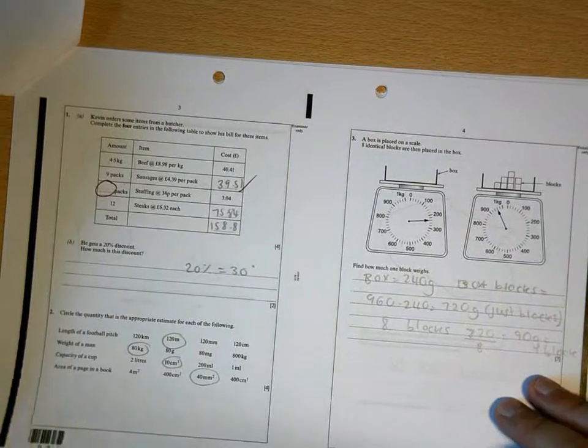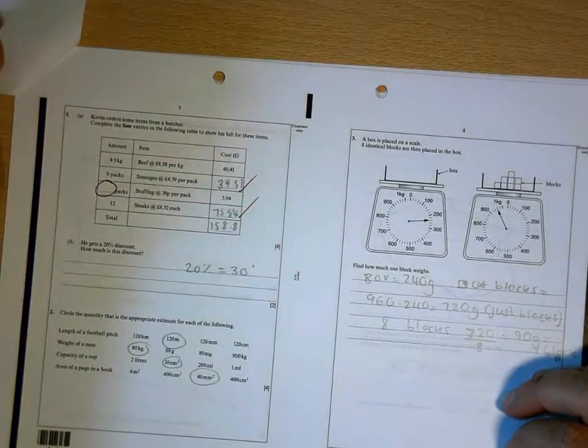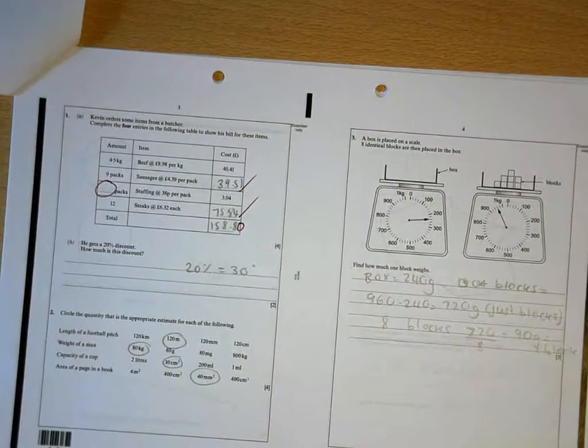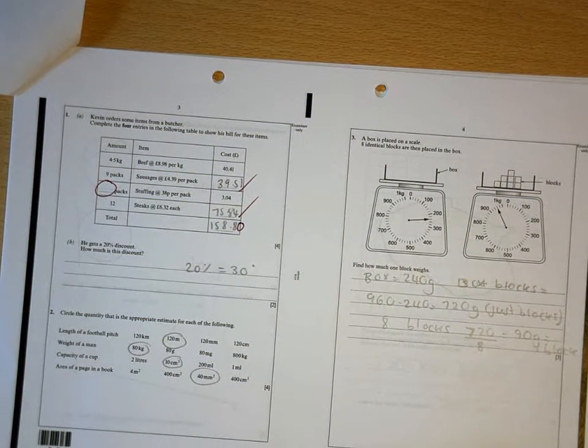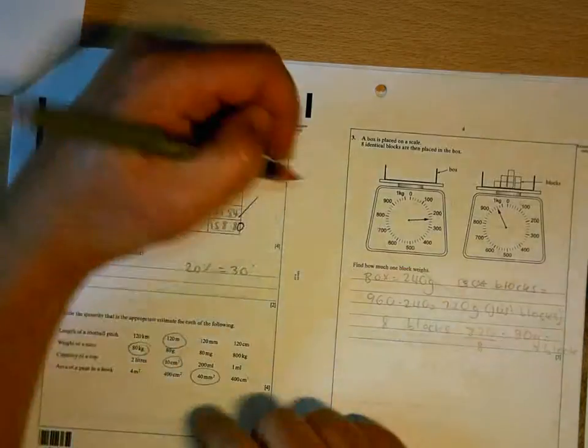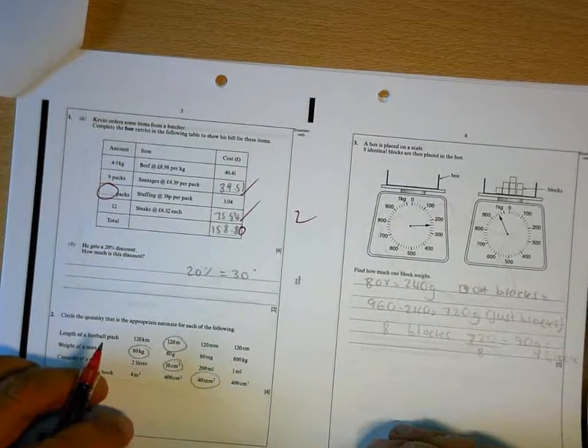You missed out one of the questions there, and here you need to add that zero. Just because your calculator doesn't put it in, because we're talking about money, that is something that has to be there. So only two marks for that.